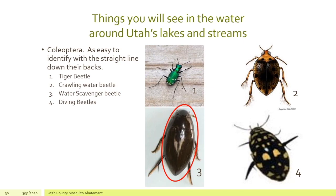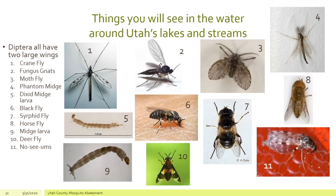Coleoptera are easy to identify because these are referred to mostly as your beetles. They have a straight line down their backs — if you look closely at number one you can maybe see that. I've circled number three, which is your water scavenger beetle, really quite large, with that nice line running straight down its back where the wings come together. Number two is a crawling water beetle, and number four is a diving beetle. All of these you'll find in and around aquatic environments. The tiger beetle not so much in the water, but the other three you do.